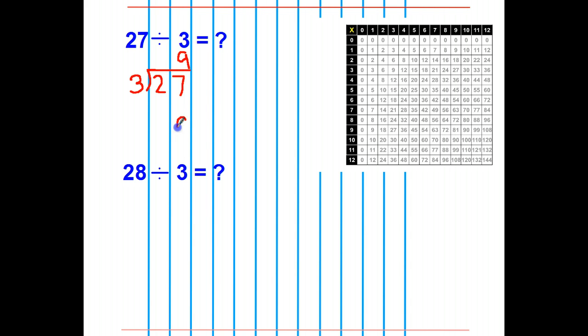So this says 27 divided by 3 is 9. Let's check. 9 times 3 is 27. So I know it's correct. I've used my opposite function to check.